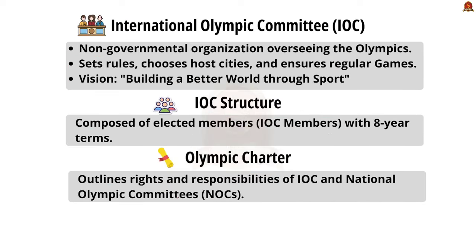The International Olympic Committee (IOC) is a non-governmental organization that looks after the administration of Olympic Games worldwide. It decides the rules and regulations, and when and where the next Olympic events will be held. The main aim is to ensure regular holding of Olympic Games. The vision of IOC is to build a better world through sports. IOC members are elected by the IOC General Assembly with an 8-year term and can be re-elected. The IOC governs through the Olympic Charter, which outlines the rights and responsibilities of IOC and NOCs.